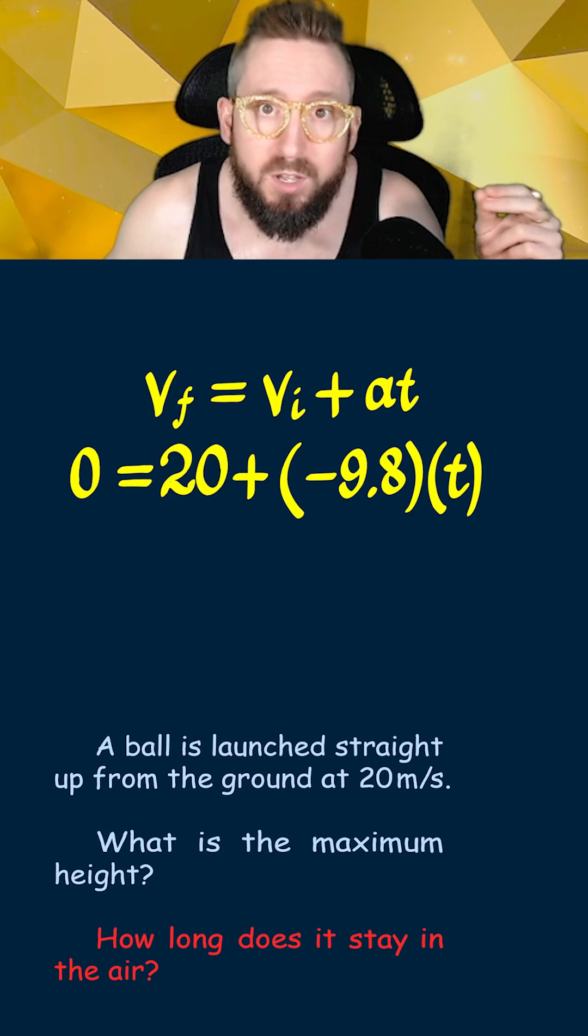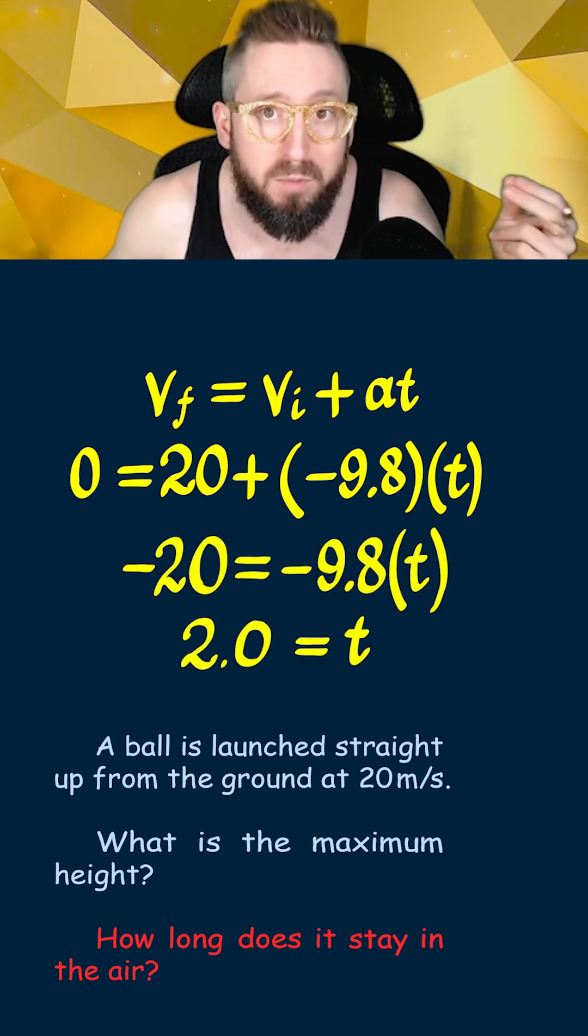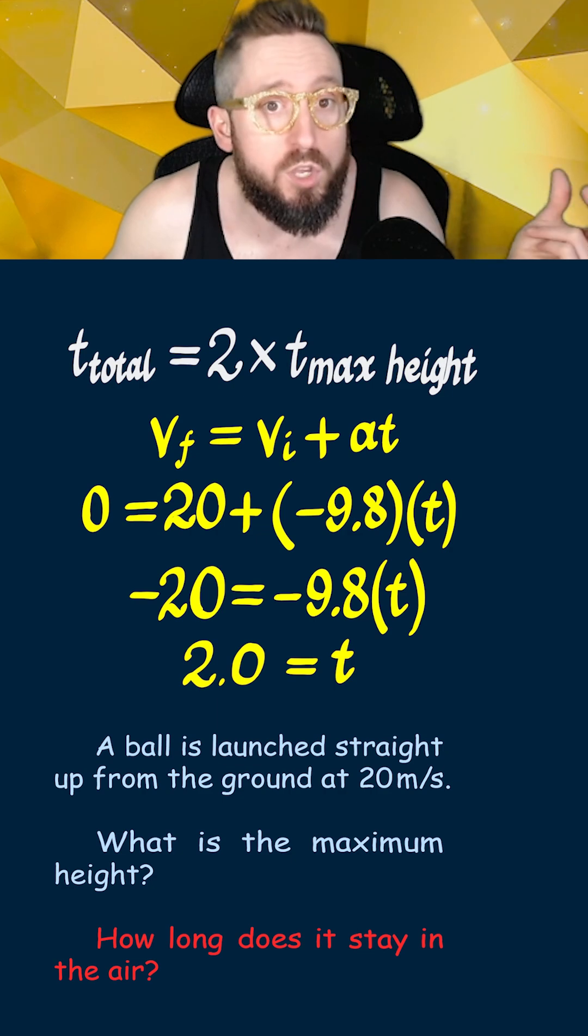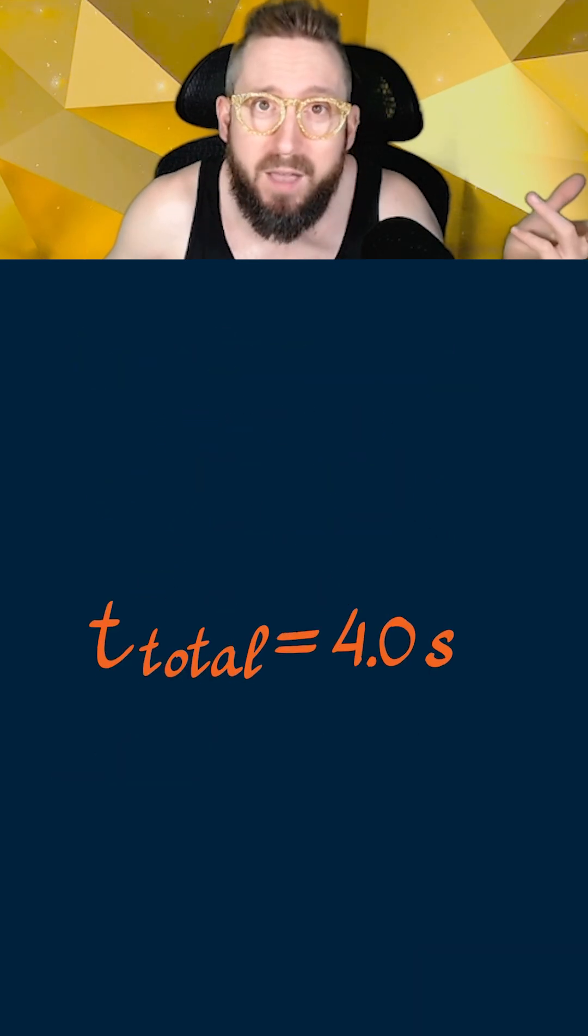Now all that's left to do is to plug in the numbers, do a little algebra to solve for the unknown time, and you'll find that the ball reaches a maximum height in 2.0 seconds. If we double it to get the total time for the ball to get back down to the ground, it's 4 seconds. And there you have it, that's how to do 1D projectile motion in physics.